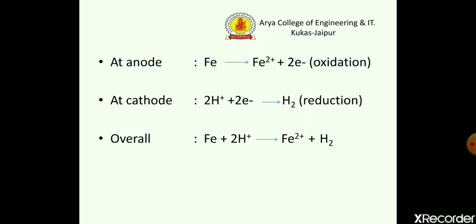The reactions are: at the anode, an oxidation reaction takes place, meaning electrons are released. The reaction is: Fe → Fe²⁺ + 2e⁻. At the cathode, a reduction reaction takes place. The electrons released at the anode move to the cathode, and the hydrogen ions present in the environment accept the two electrons and convert into hydrogen gas. The overall reaction is: Fe + 2H⁺ → Fe²⁺ + H2.